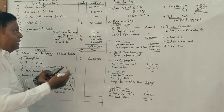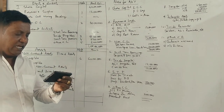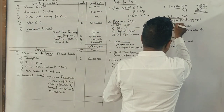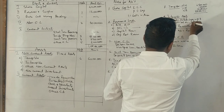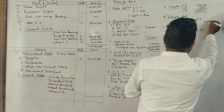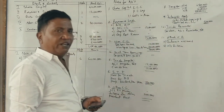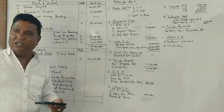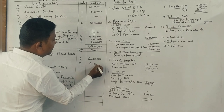Next, intangible assets — goodwill, and technical know-how which is software itself — is 4 lakhs. So, intangible assets total 4 lakhs.